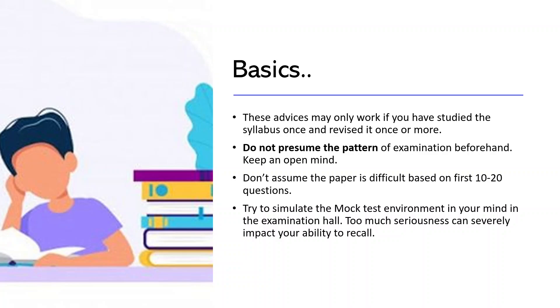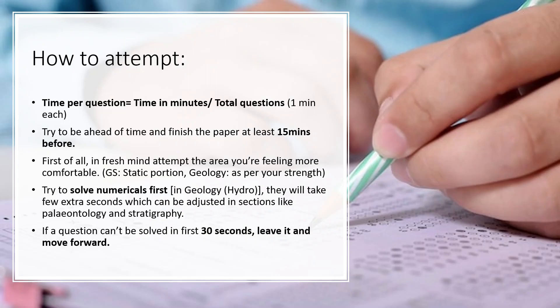Too much seriousness in the examination can negatively affect you and your ability to recall things — you don't want that. Now, while attempting questions keep in mind that you have two hours for 120 questions, meaning one minute per question — that is not a very exorbitant time. So use it wisely. From the beginning, when you are in a relatively fresh mental state, I suggest jumping directly to the sections where you are more comfortable. For example, in General Studies, attempt the static subjects first.